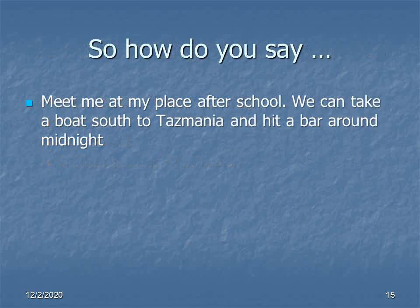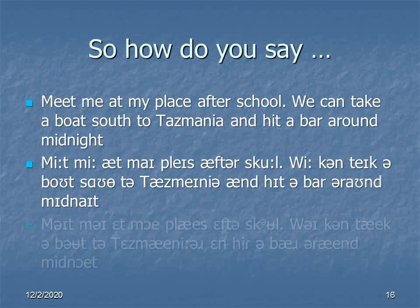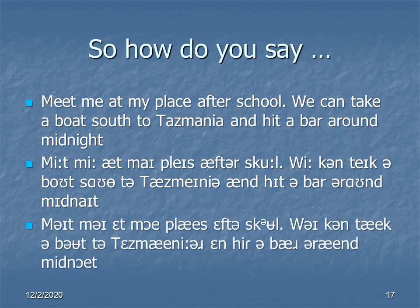So now, why don't we take a look at a sentence and do what we've done with, for example, Southern English or African-American vernacular — transcribe it into IPA and see both how it looks and how it sounds. The sentence in this case, which I've transcribed into my own dialect as nearly as I can, is: MEET ME AT MY PLACE AFTER SCHOOL. WE CAN TAKE A BOAT SOUTH TO TASMANIA AND HIT A BAR AROUND MIDNIGHT.